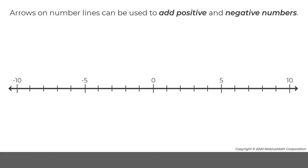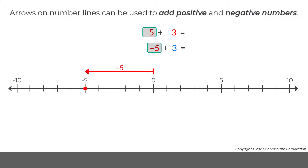A similar strategy applies for the calculations negative 5 plus negative 3 and negative 5 plus 3. For both calculations, an arrow is drawn to represent negative 5. This arrow starts at 0, points in the negative direction, and has a length of 5.